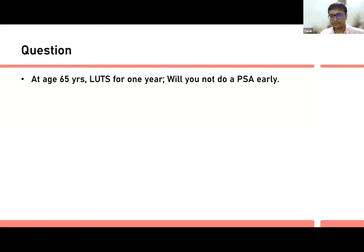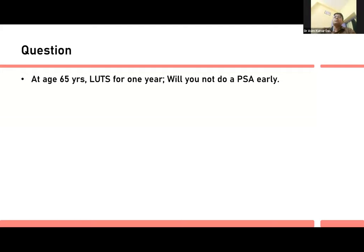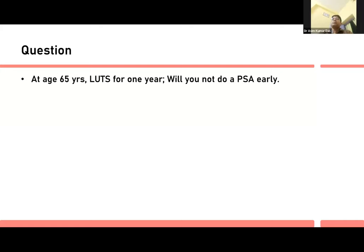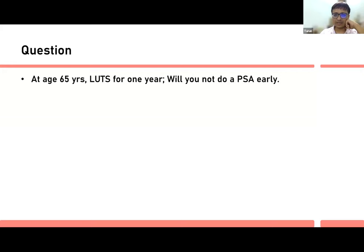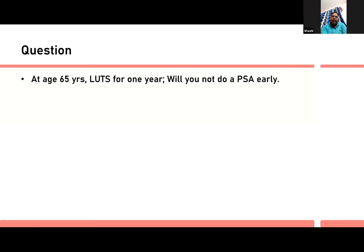The question is raised: at age 65 with LUTS, should PSA have been checked earlier? The discussion covers PSA screening recommendations. On DRE, if abnormality is suspected, PSA must be done at the first visit on shared decision making. The US Preventive Services Task Force recommends PSA screening between ages 55-69 on shared decision making. The AUA similarly supports opportunistic screening rather than mass population screening.